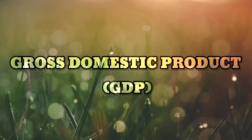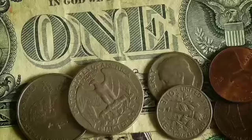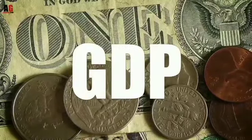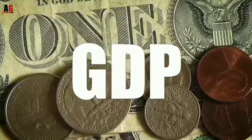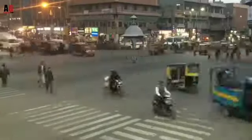The second concept is Gross Domestic Product, GDP. GDP of a country is the total money value of final goods and services produced within the domestic territory during a financial year. The income of people working abroad and the profit of institutions and firms operating abroad will not be included while calculating the GDP.